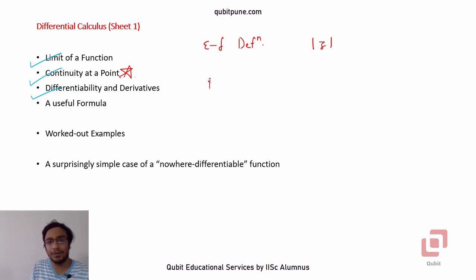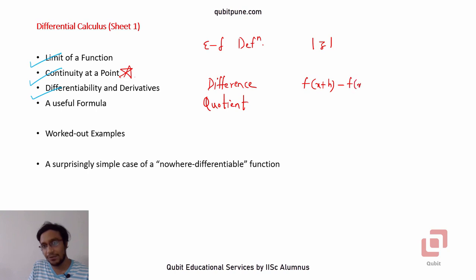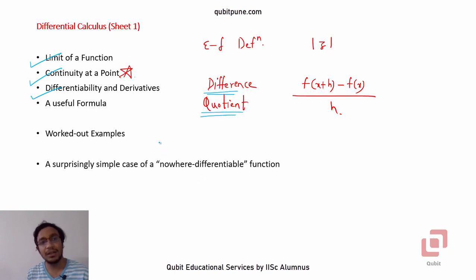For differentiability, the idea of the difference quotient remains the same. When you studied the derivative of a single variable function, the difference quotient was f(x+h) − f(x) over h, and when we take the limit as h tends to 0, if the limit exists, we call that limit the derivative. We will see a similar difference quotient in the complex variable case, and then we will see a very useful formula involving partial derivatives to find the derivative of functions.